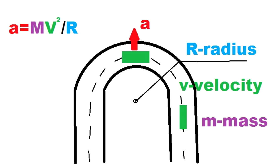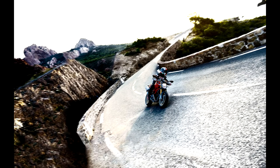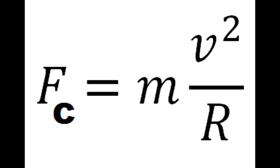The centrifugal force equals mass multiplied by velocity squared, divided by r — where r is the radius. So you can see: if we reduce the radius of the turn (the tighter you turn), the greater the centrifugal force. And if you increase the speed twice, the centrifugal force increases four times because we have velocity squared in the formula. Also, if your motorcycle's mass is heavier, it experiences more centrifugal force.